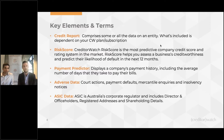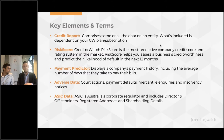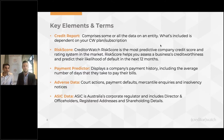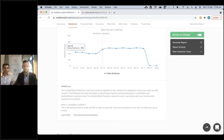ASIC data allows us to link directors of one company to another and look at cross-directorships — how they operate as a director. They might have one company that looks really good, but then they've got 115 cross-directorships, most of which are failing or have failed. So really powerful information there from ASIC. And that data is included in the report if someone else within Creditor Watch has purchased it previously; if not, we flag where an update is required. With that in mind, I'm going to jump in and start looking at some of these reports.